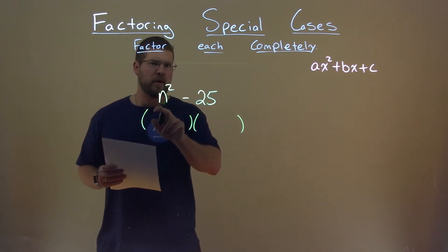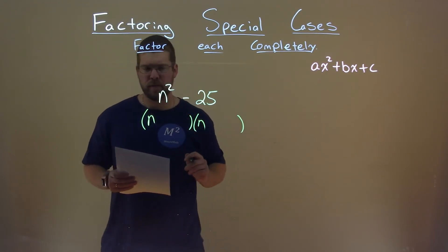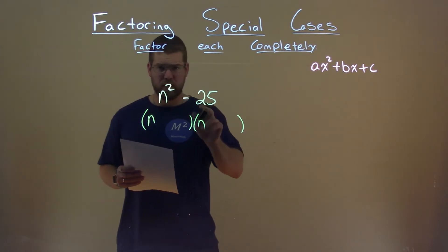Well, n squared is a perfect square. n times n is n squared. 25, our c value, is also a perfect square. Square root of 25 is 5.